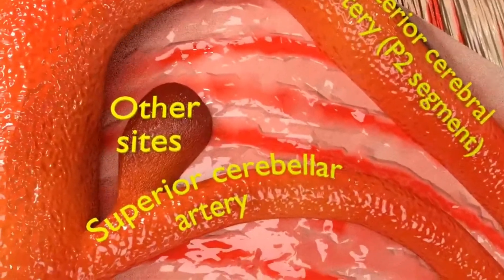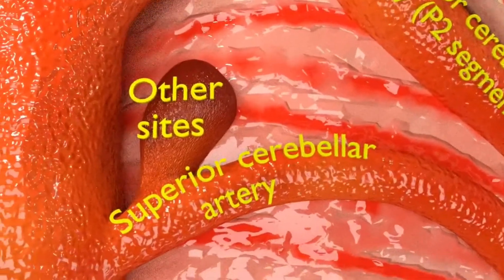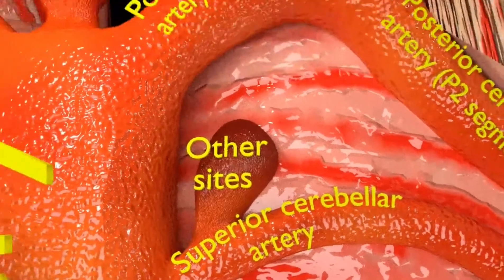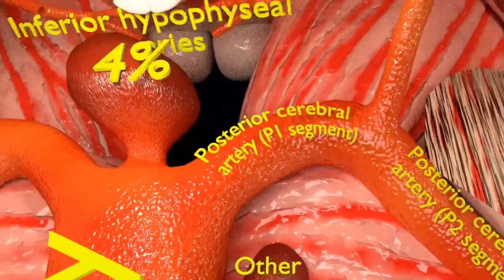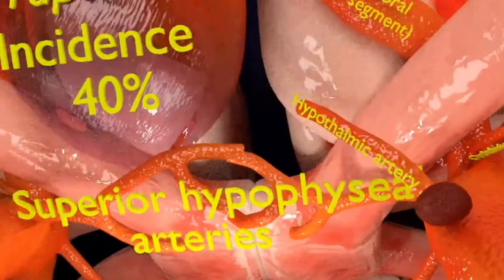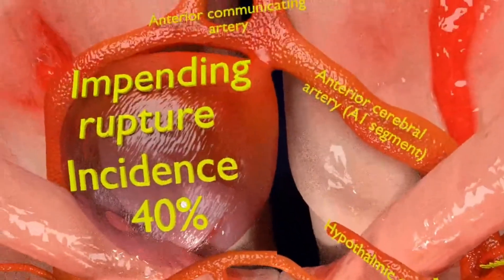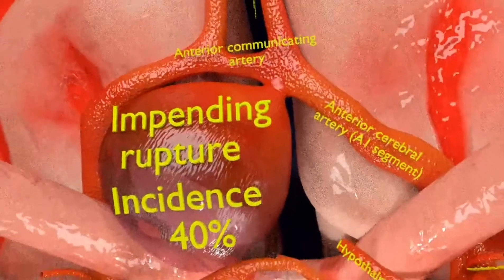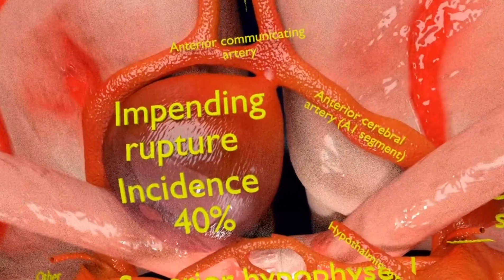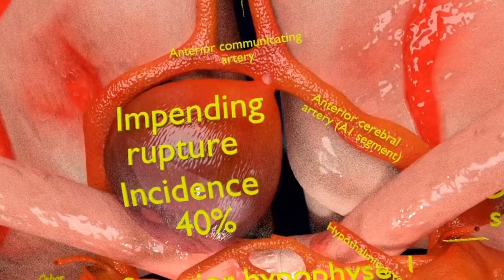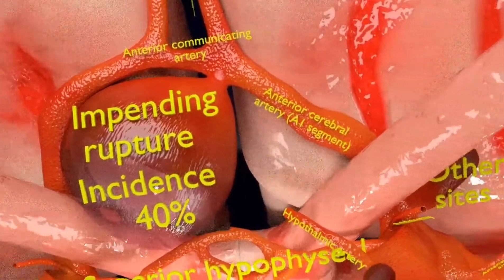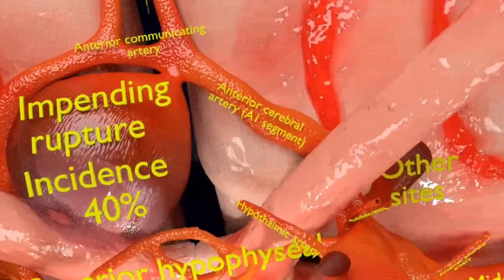The site accounting for the highest incidence of aneurysm in the circle of Willis is at the junction of the anterior communicating and anterior cerebral artery, which is approximately 40%. Here you see the mentioned aneurysm at the stage of impending rupture.